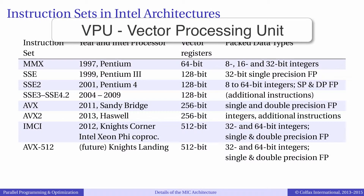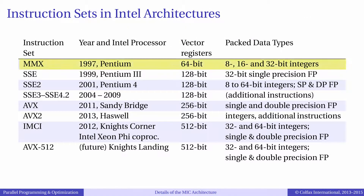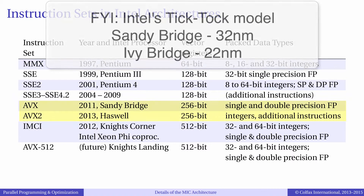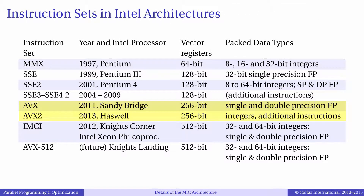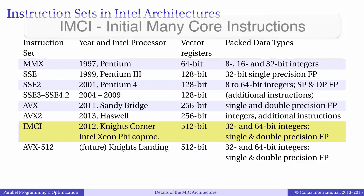Vector instructions in Intel architectures were first introduced in 1997 as the MMX instruction set, or Multimedia Extension instruction set, for the Pentium CPUs. The initial MMX instruction implementation only had 64-bit registers. Modern Intel Xeon processors based on Ivy Bridge and Haswell architectures support 256-bit wide vector registers in AVX and AVX2 instruction sets. First-generation Xeon Phi coprocessors support 512-bit wide vector registers. The instruction set in Xeon Phi based on Knight's Corner chip is called IMCI, which stands for Initial Many-Core Instructions.